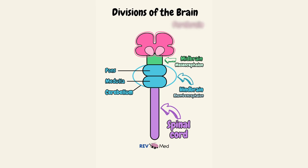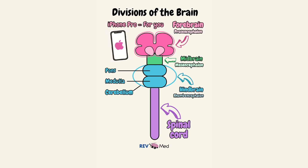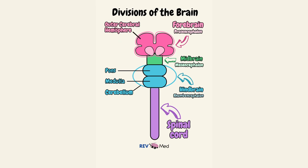Now the forebrain is known as the prosencephalon — think iPhone Pro, pro is for you. The prosencephalon has two parts: the outer part, the outer cerebral hemisphere, is called the telencephalon, and the deeper cerebral hemisphere is called the diencephalon.